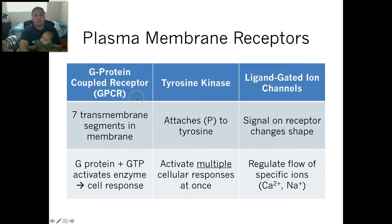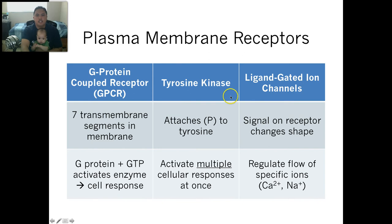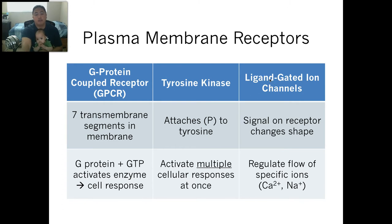There are three types of receptors. The first is the G-protein coupled receptor, which has seven transmembrane segments and passes on the message within the membrane. The second is tyrosine kinase, which we'll discuss later. And the third is a ligand-gated ion channel. These are three types of ways you can receive a message in the plasma membrane.